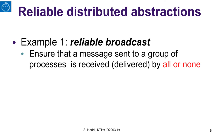Here is an example of a service abstraction: reliable broadcast. We have a group of processes. These processes can broadcast messages to each other, and we want to ensure that if a message is sent to a group of processes, it is received by all or by none, so that the view of all processes is the same.